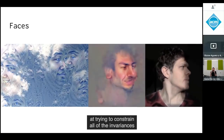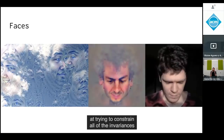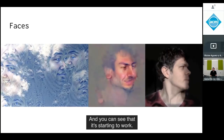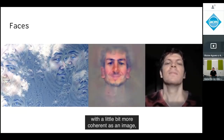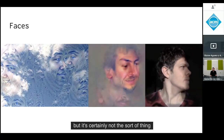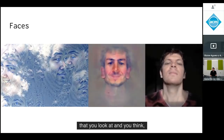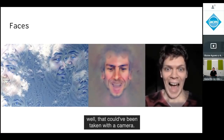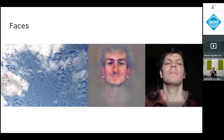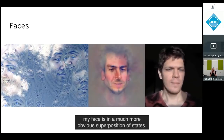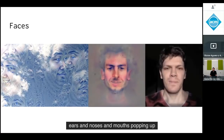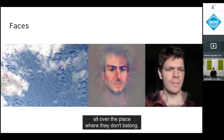These were some early experiments trying to constrain the invariances of the synthesis using a model. It's starting to work and give something a little more coherent as an image, but it's certainly not the sort of thing you'd think could have been taken with a camera. At moments — especially when his face is in certain poses — my face appears in a superposition of states, with ears, noses, and mouths popping up all over the place where they don't belong.